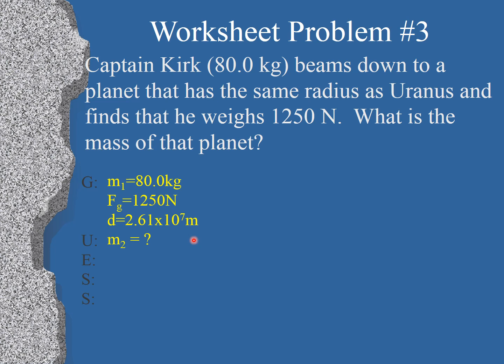The unknown is the mass of the planet. So the equation we're going to use is this one right here. And we need to rearrange it for m2. So we do that magically and we get m2 is equal to the force of gravity times the distance to the center squared, divided by g and divided by m1, Captain Kirk's mass.